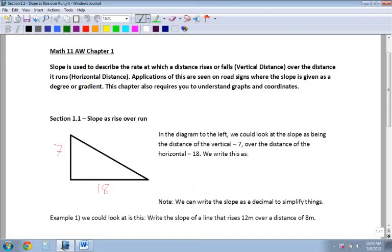Alright, for chapter one, we're going to look at slope, and slope is written as rise over run. So the slope is used to describe the rate at which a distance rises or falls, that's the vertical distance, over the distance it runs, which is called the horizontal distance.